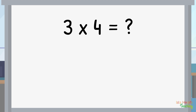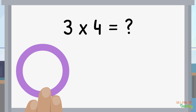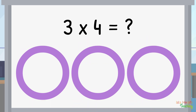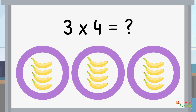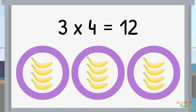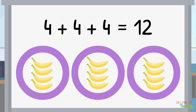Well, we follow the same steps as we did with the previous question. We know this reads 3 groups of 4, so we begin by making 3 groups. Now that we have our 3 groups, we need to add 4 items to each group. I'm going to add 4 bananas to each group. Let's count how many bananas are in all 3 groups by skip counting by 4's: 4, 8, 12. So the answer is 3 groups of 4 equals 12, and 4 plus 4 plus 4 equals 12.